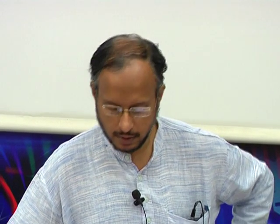In other words, what is a cause and what is an effect in any phenomena that we are trying to understand? I have titled this talk Causality and Experiment Design, and I am going to describe the basics of causality and the basics of good experiment design. Particularly in science but also in many engineering domains, it turns out that the theory we are trying to develop ultimately is about making a statement about causality. We wish to end up saying that there is a variable x which causes an effect y.